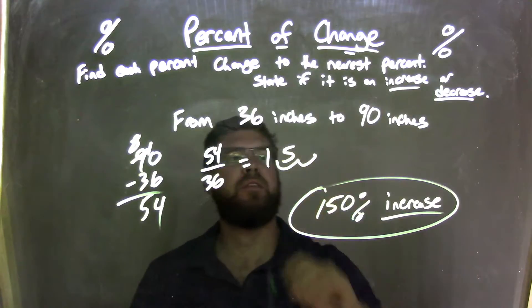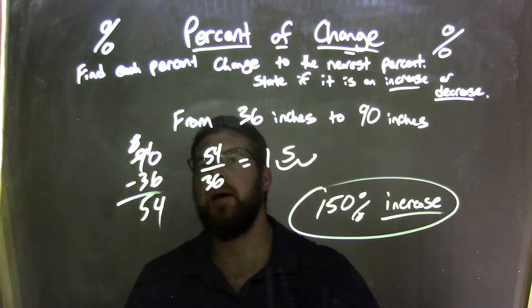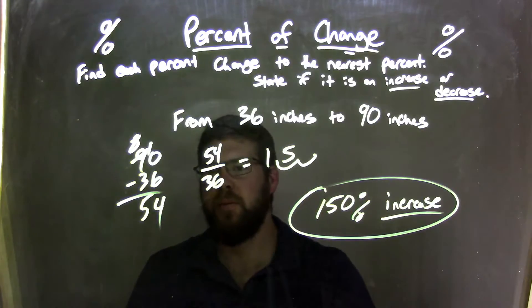Let's recap. We started with 36 to 90 inches. We need to know if that was an increase or decrease. Increase, it's going up. We take that 90 and subtract 36 from it to find the difference between these two numbers, and we have 54.